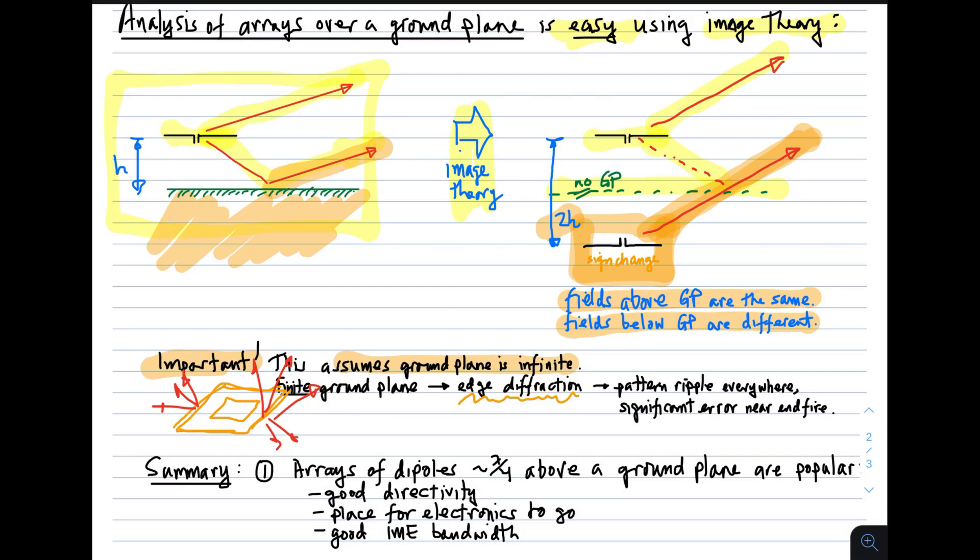Now, if the array is electrically large, we would expect this to be not a big contribution. Nevertheless, because there is edge diffraction, you will see two things happen. One is that you will see pattern ripple everywhere. The ripple has to do with these edge-diffracted fields interacting with the element fields. But since the diffraction tends to be relatively small, the pattern ripple can be pretty small. So instead of seeing a pattern which is smooth, you might see a pattern which has a little bit of ripple on it like that. And the magnitude and spacing of the ripple will have to do with how big the ground plane is. Of course, if the ground plane edges recede to infinity, then that ripple will become vanishingly small, and the ripple spacing will become very large.